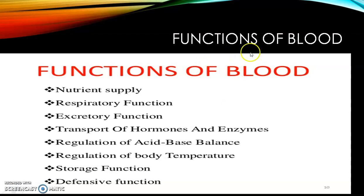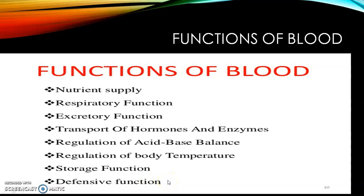The functions of blood include supplying nutrients to tissues, respiratory function by carrying oxygen to tissues and carbon dioxide to the lungs, excretion of waste products towards the kidneys, and transport of hormones and enzymes. Blood also regulates water balance, acid-base balance, and body temperature. It has a defensive function by producing antibodies such as IgG, IgA, IgM, IgD, and IgE. It also has a storage function, storing albumin, globulin, and other substances.